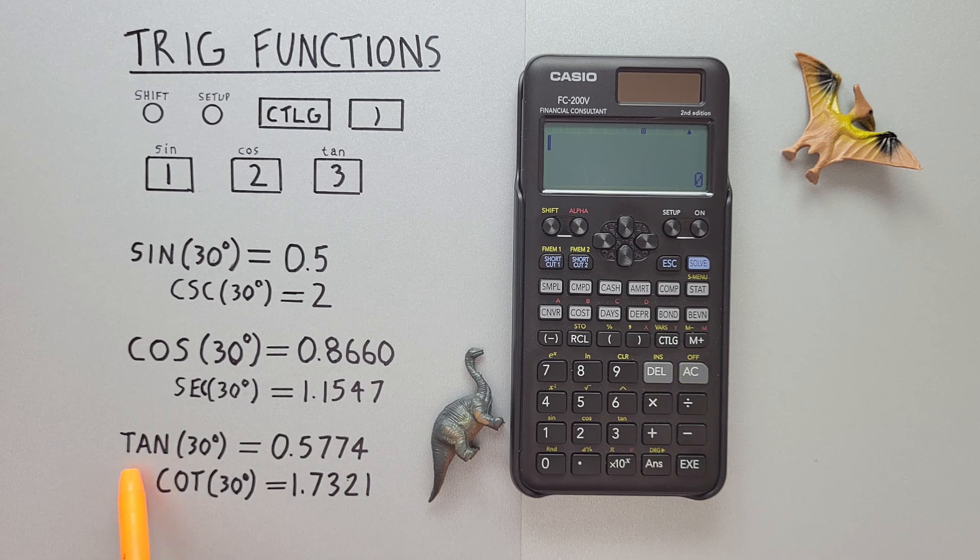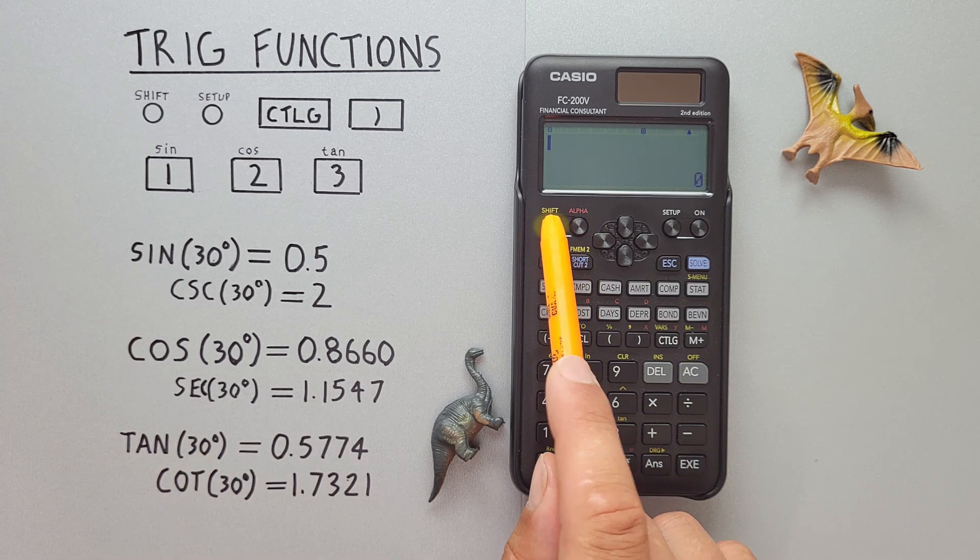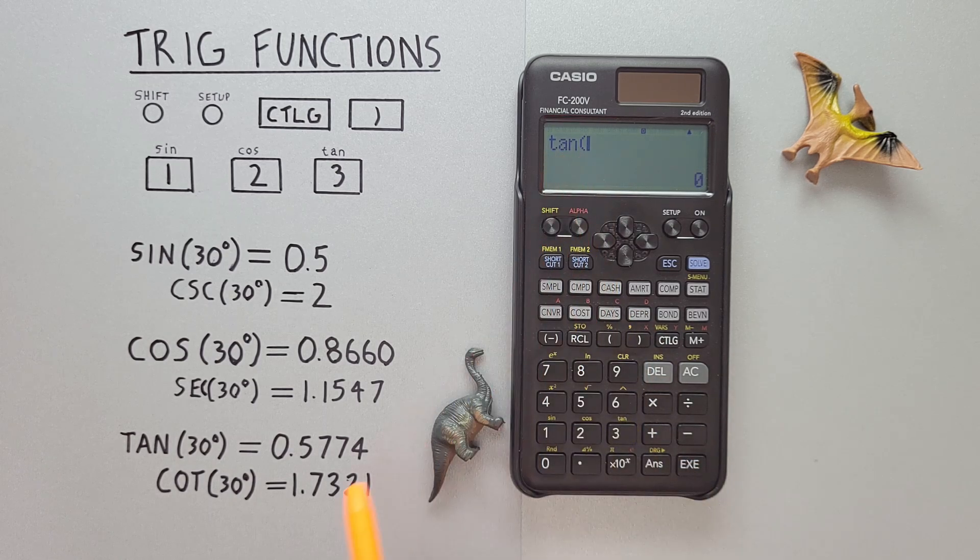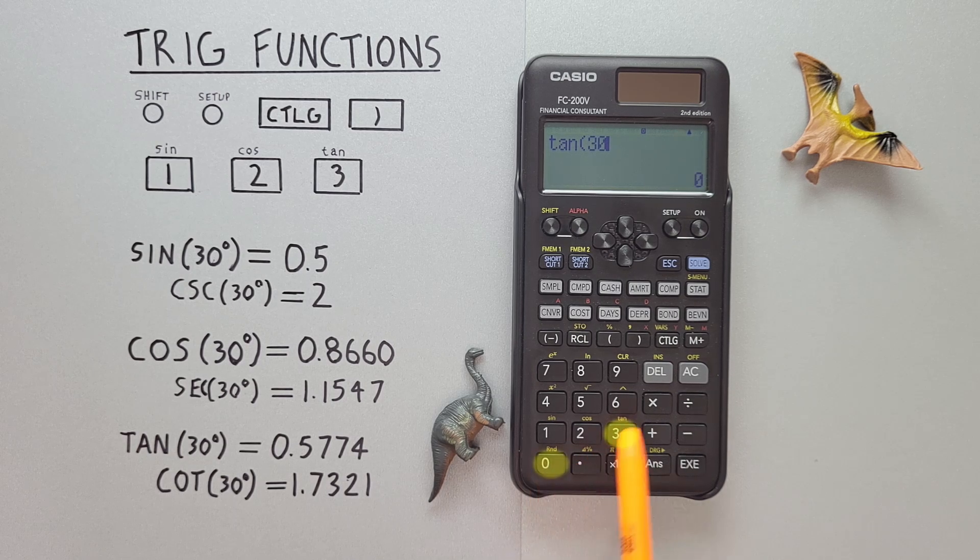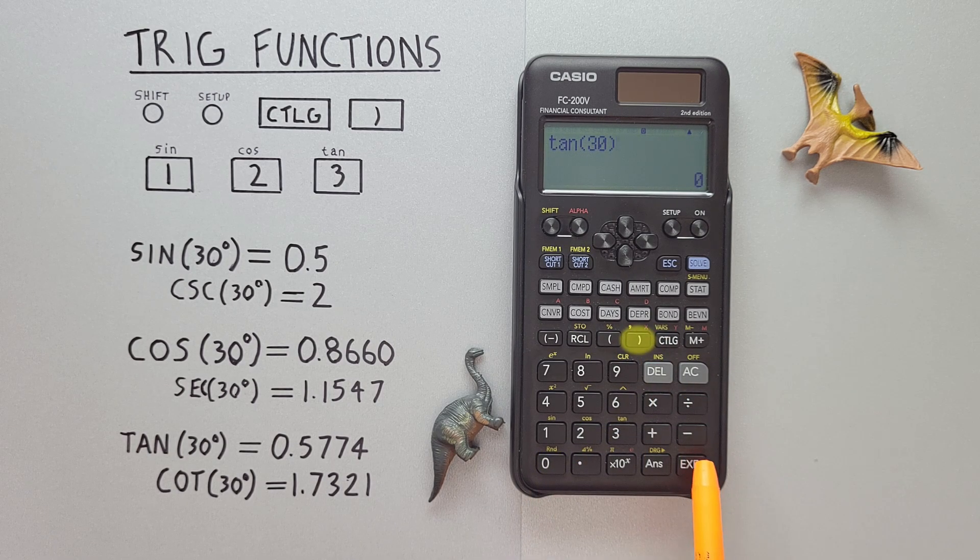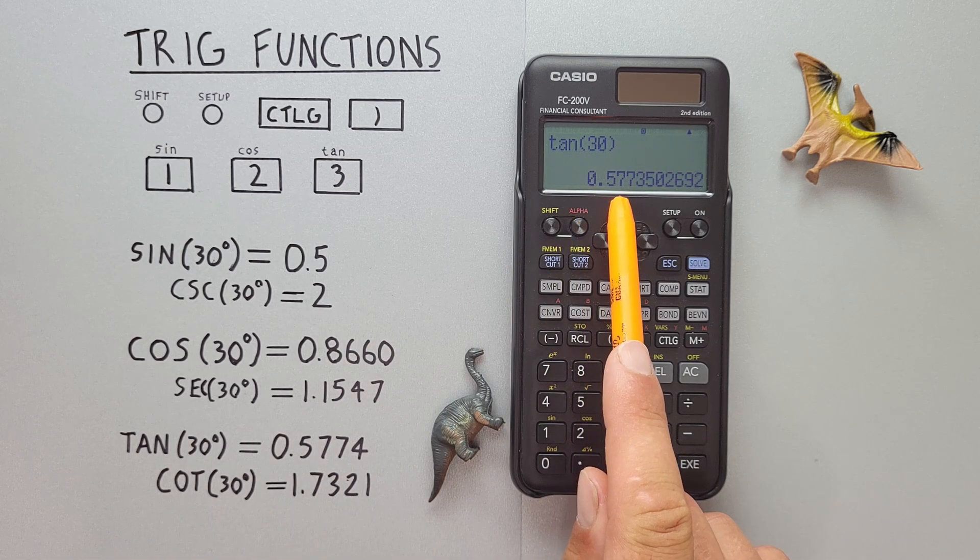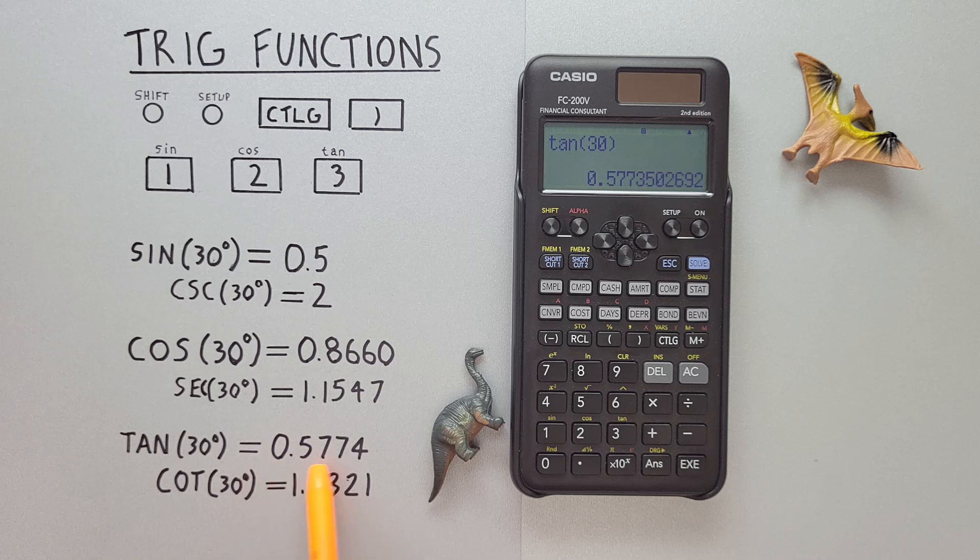For tan, we use the shift function of three. So we go shift three to get tan on our screen. Enter the 30, close our bracket, and hit exe. And see what would round to 0.5774, which is correct.